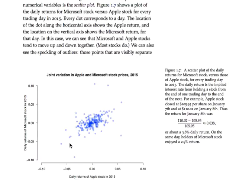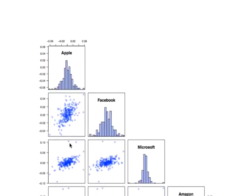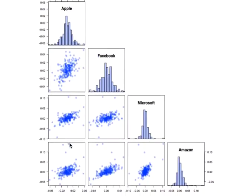If you've got more than two numerical variables, a really nice way to handle that is with a scatter plot matrix. That's exactly what you're looking at in this plot here. Now we've got four numerical variables: stock returns for Apple, Facebook, Microsoft, and Amazon. In every little cell of this scatter plot matrix, you're seeing a scatter plot between one pair of those two variables.